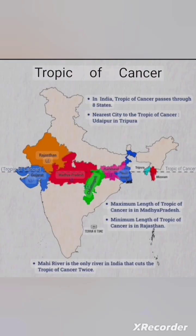I will highlight and explain some key features on the map displayed on your screen. In India, the Tropic of Cancer passes through eight states. The nearest city to the Tropic of Cancer is Udaipur in Tripura. The maximum length of the Tropic of Cancer in India is in Madhya Pradesh, and the minimum length is in Rajasthan.